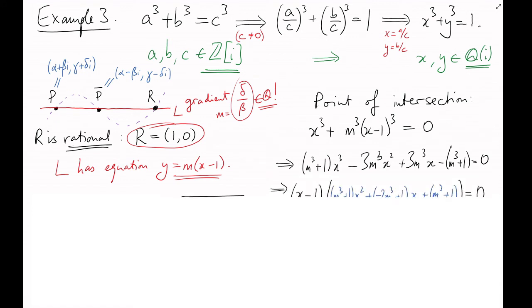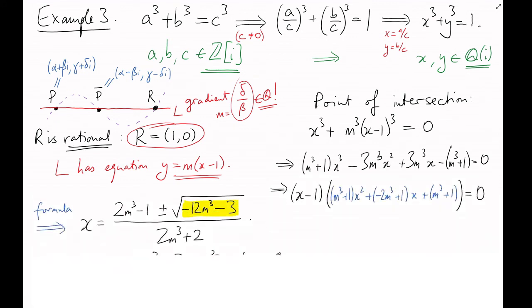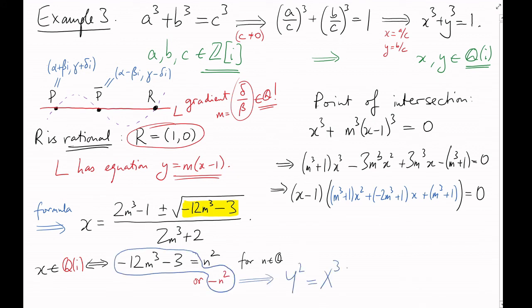So we can proceed as before, until we get to this stage. Earlier we wanted this expression to be in Q, so we concluded that the expression under this square root sign had to be a square. But now we want this expression to be in Q adjoin i, so the expression under the square root sign could be minus a square. This leads us to another elliptic curve, which we can look up in Cremona's tables to see that there are no solutions.